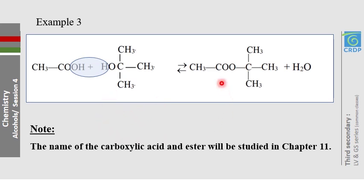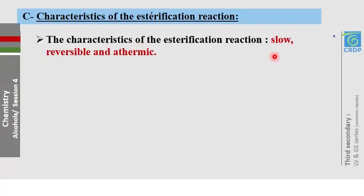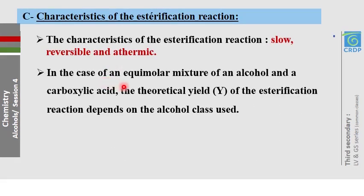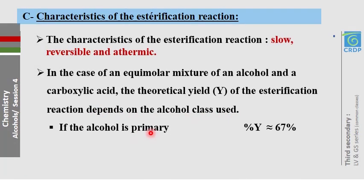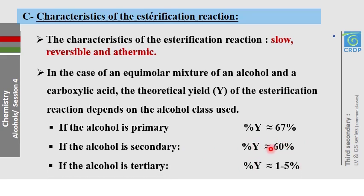The nomenclature of the ester will be covered in chapter 11. Now, the characteristics of the esterification reaction: it is a very slow reaction, it is incomplete or reversible, and it is athermic. For an equimolar mixture of alcohol and carboxylic acid, the theoretical yield depends on the class of alcohol: primary alcohol gives 67%, secondary gives 60%, and tertiary alcohol gives only 1–5%. Tertiary alcohols are the least reactive in esterification.